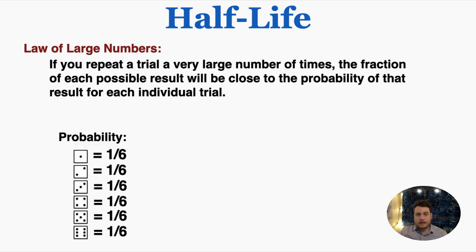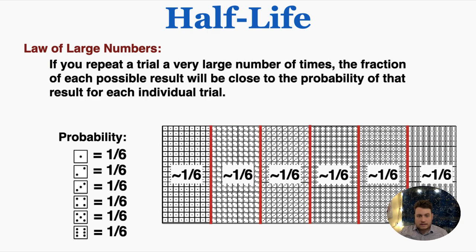Similarly, the odds of rolling any one number on a die are exactly one in six. So what this means is that if you took a single die and rolled it a million times and then organized the results, you would find that each individual result occurred about one-sixth of the time. You would get the die landing on one about one-sixth of those total million rolls. So again, you can see that the fraction of the results with that number is equal to the probability of that number if we repeat an event a very large number of times.